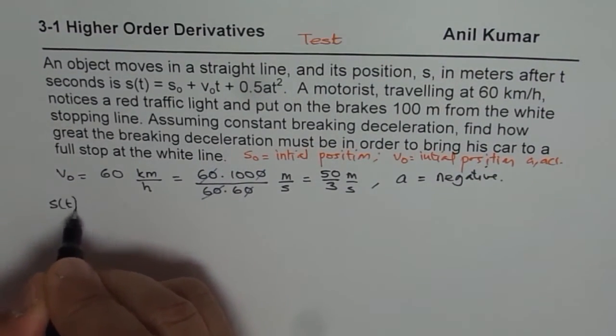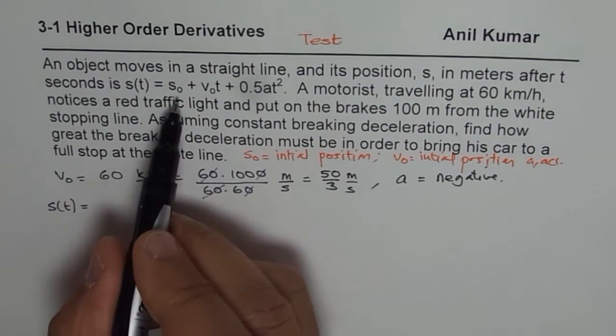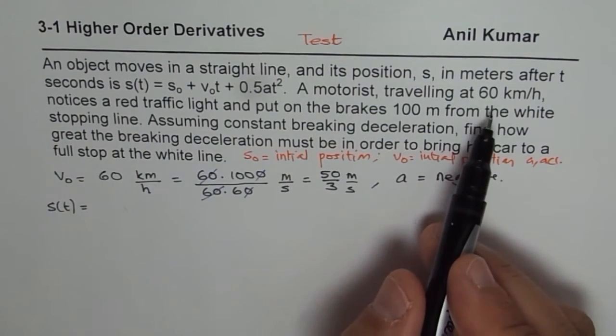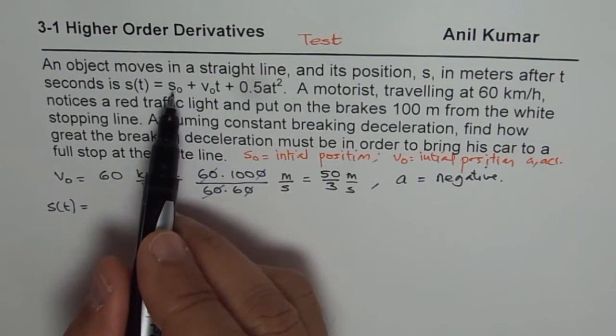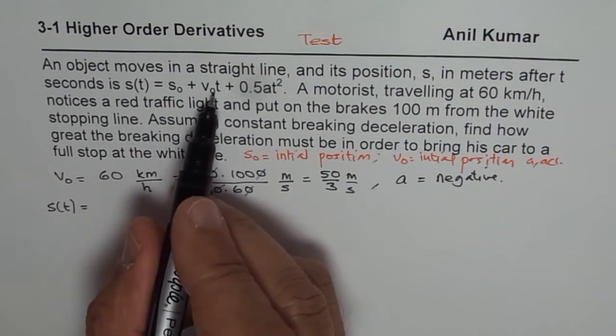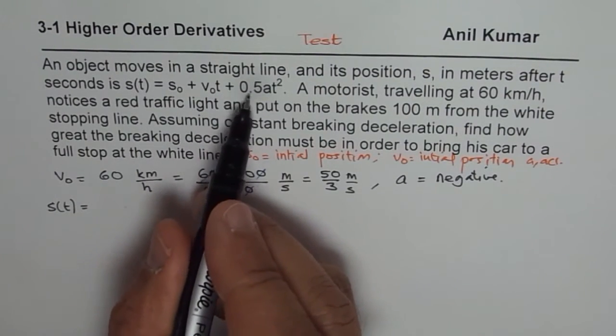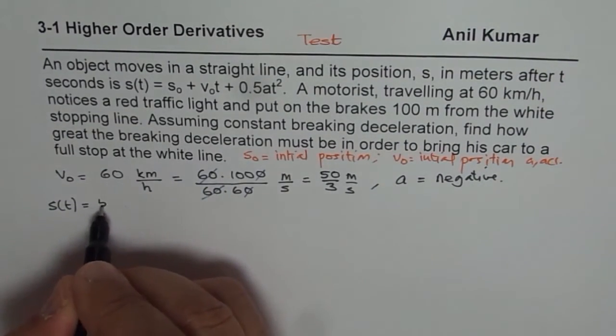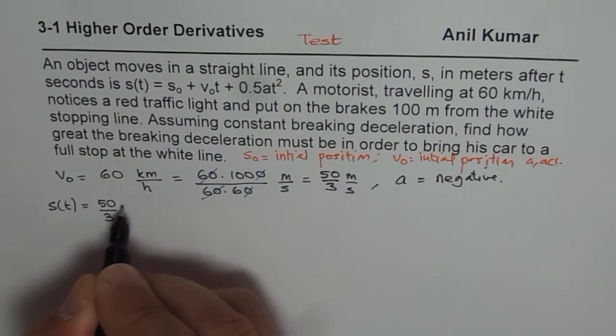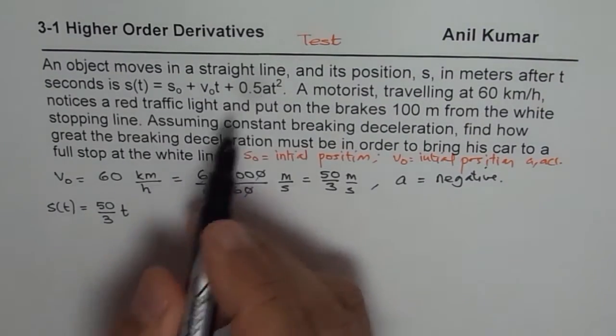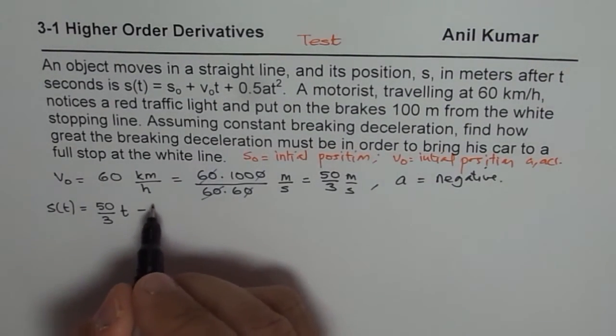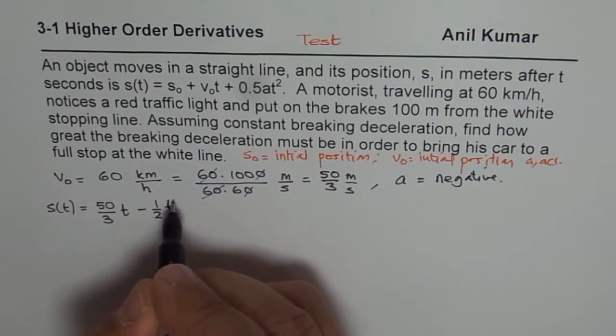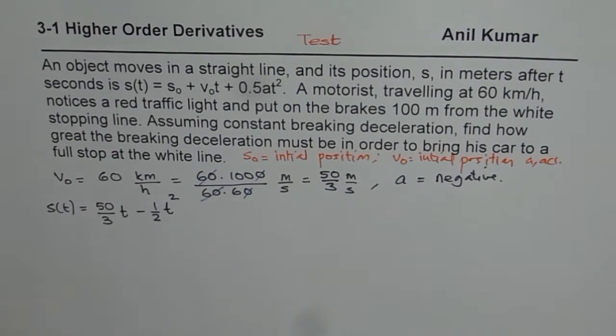So let us write down the formula. Displacement s(t) equals initial distance. We will take from the time when the brakes are applied. So s₀ will be 0 for us. So we are left with v₀t plus half of at². So v₀ is 50 over 3. So write 50 over 3t. We are taking a as negative since the brakes are being applied. We are going to write half of at².